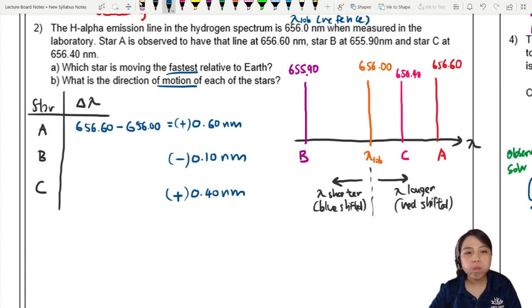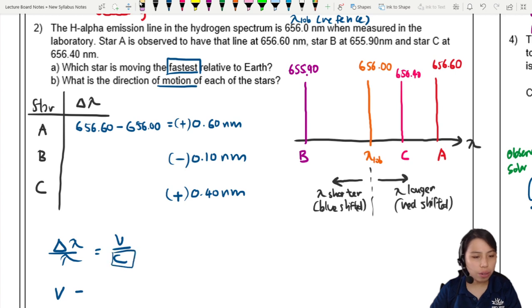So, fastest. Let's look at our equation again. Delta lambda over lambda equals V over C. So fastest means the velocity. This C is a constant, lambda is a constant. So velocity is proportional to the change in wavelength.